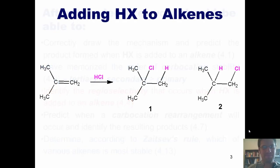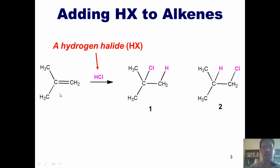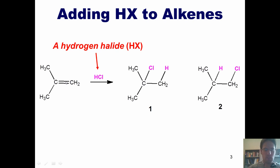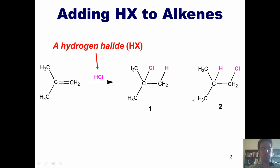With that said, let's get started. We've seen this reaction in our previous chapter. We can take an alkene and add a hydrogen halide, HX, where X is either a chlorine, bromine, or iodine, and we end up generating one of two possible products. In the mechanism, the pi electrons from the alkene come out and attack the hydrogen, breaking the hydrogen-chlorine bond. That generates a carbocation intermediate, and then the chloride comes back in and attacks it to form a bond, generating one of these two products.